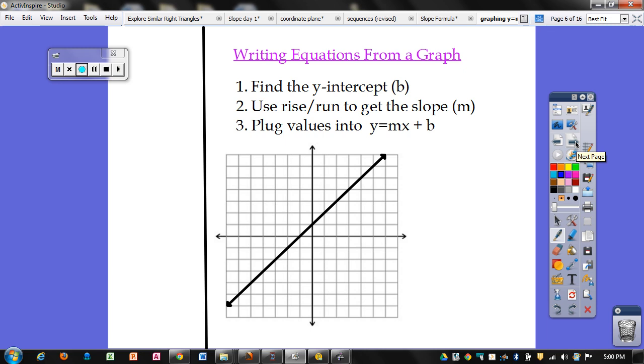When you're writing equations from a graph, the first thing you're going to do is find the y-intercept. So you're looking for the point where the line crosses or intersects the y-axis. So it's at this point right here. This is the point 0, 1. So the y-coordinate is 1. That means your b is equal to 1.